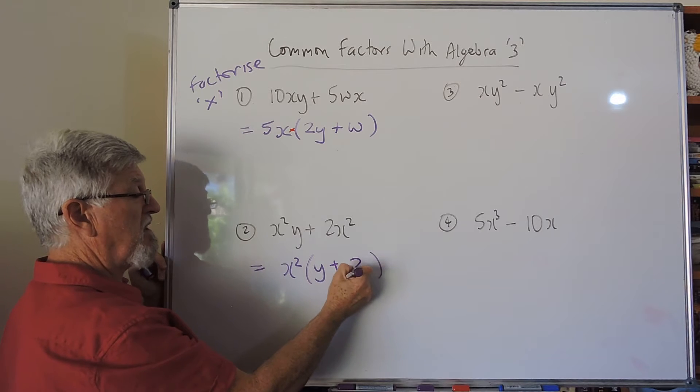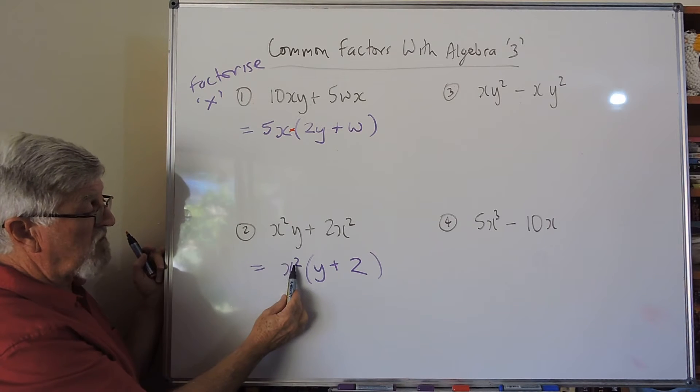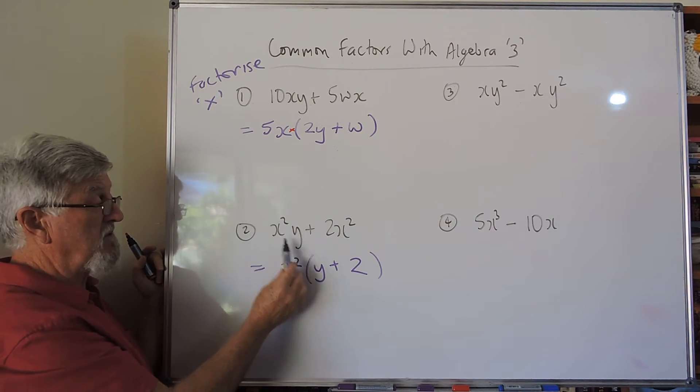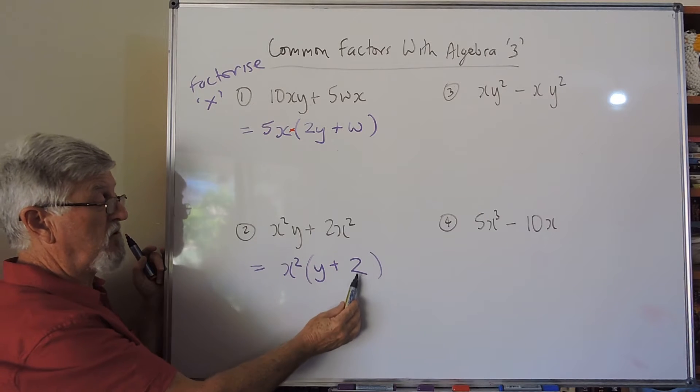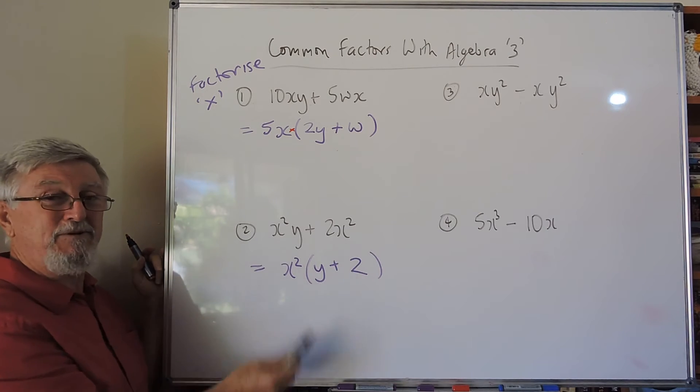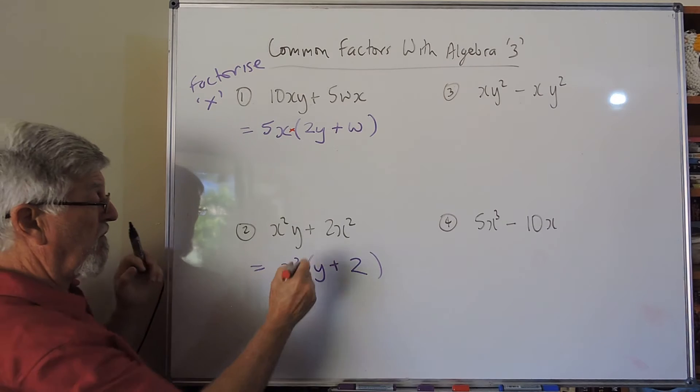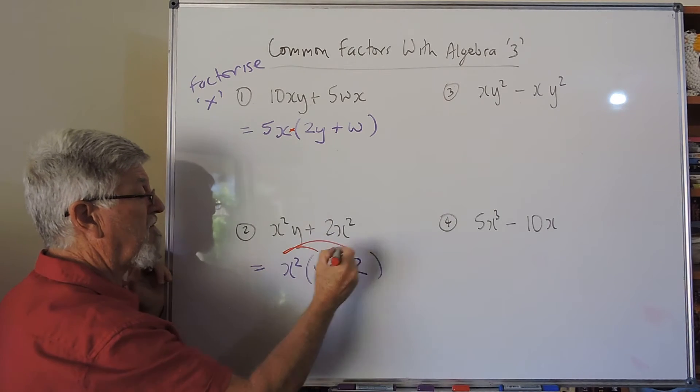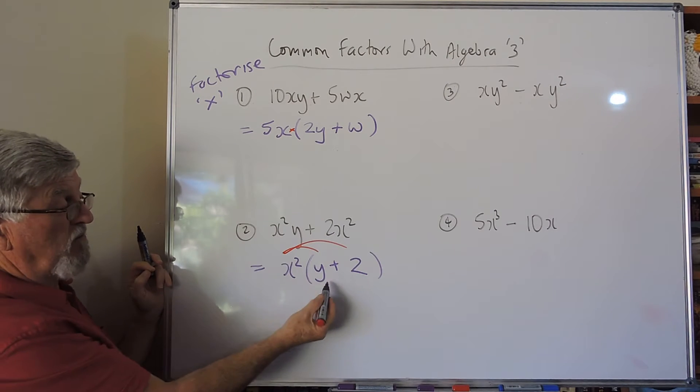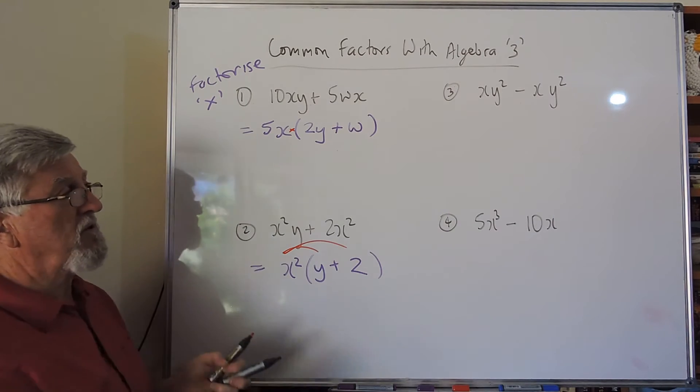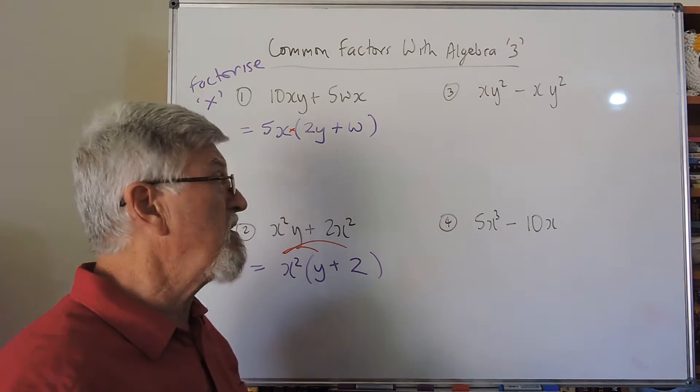So I put the bracket in. x² times what is x²y? I need the y. x² times what is 2x²? I need the 2. So let's have a look at what it does: x²y if you expand the bracket is that one, x² by 2 is 2x² if you expand the bracket for that one. Some people by the way use the eyebrows to keep track of what they've done. So there's your x²y and there's your 2x², and we write the number first.